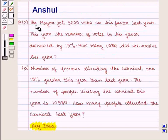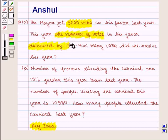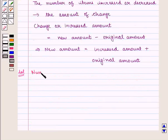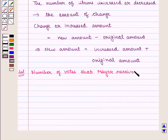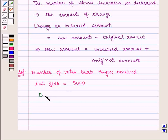In Part A, we are given that the number of votes the mayor received last year is equal to 5000. It is also given that the number of votes decreased by 15%, and we need to find the number of votes the mayor received this year.